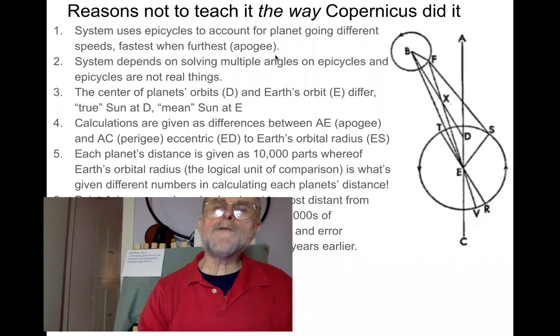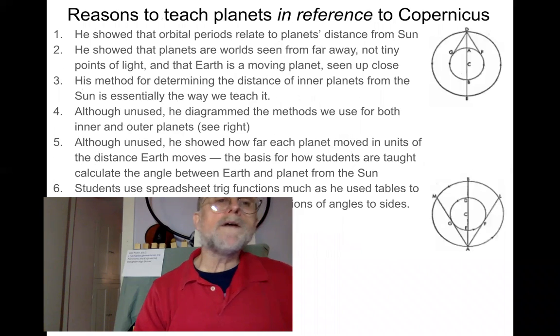So we don't do it exactly the same way as Copernicus. He used epicycles to account for this anomaly that the planets speeded up and slowed down. He believed that they kept going at constant speed on their circles. But these are important things that we relate from Copernicus to astronomers today: that the orbital periods are related to the distances from the sun, that the planets are worlds seen from far away, not tiny points of light, and that Earth is a moving planet just seen up close.